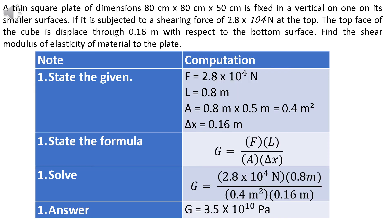Okay, let's proceed to a sample problem. A thin square plate of dimensions 80 cm × 80 cm × 50 cm is fixed vertically on one of its smaller surfaces. If it is subjected to a shearing force of 2.8 × 10⁴ N at the top, the top face of the cube is displaced through 0.16 meters with respect to the bottom surface. Find the shear modulus of elasticity of material to the plate.